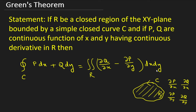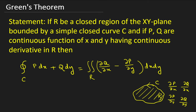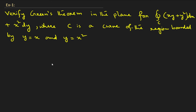For application we need only the statement, but if you need the proof you can check the other video where I have given the proof. Now let us do one example. There will be two kinds: either we are asked to verify Green's theorem, or we will be given a problem where we have to show that the left hand side equals the right hand side. In the first problem, we have to verify whether Green's theorem is verified or not.